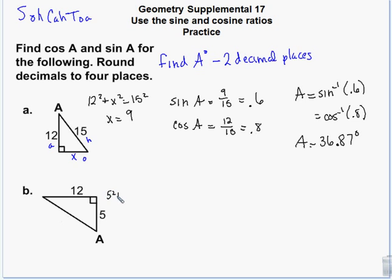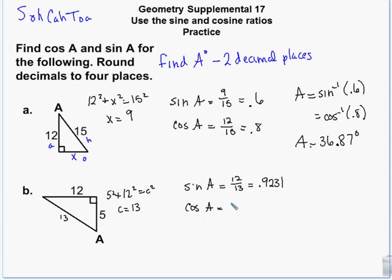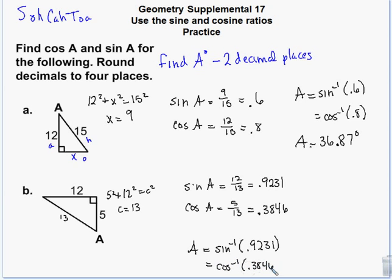For this triangle: 5 squared plus 12 squared equals c squared, so c equals 13. The sine of A is 12 over 13, which is 0.9231, and the cosine of A is 5 over 13, which is 0.3846. To find A, you can do inverse sine of 0.9231 or inverse cosine of 0.3846 — either way you get 67.38 degrees. These are or statements, either method works.